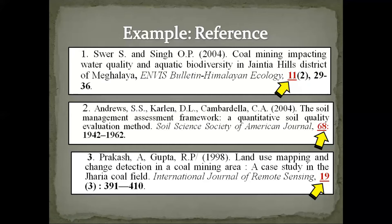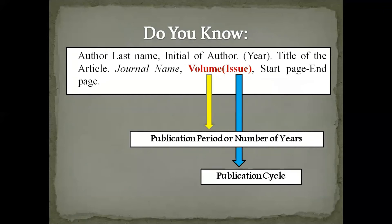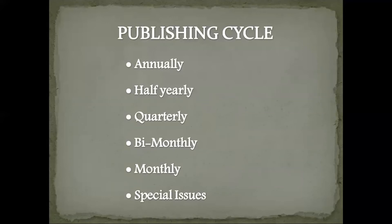Now that we understand the information contained in volume, let's see what the issue of a research journal article indicates. In any given year or volume, a research journal will publish a series or specific number of issues. The number of times a journal will publish research articles in a given year will follow one of the following publication cycles: annually, half-yearly, quarterly, bi-monthly, monthly, or sometimes special issues.